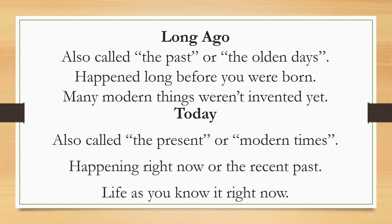Many modern things — things that you use in your everyday life — weren't even invented yet. The term today is also called the present or modern times. The term today means that it's happening right now or in the recent past, such as around the time your parents were born. The term today means life as you know it right now.